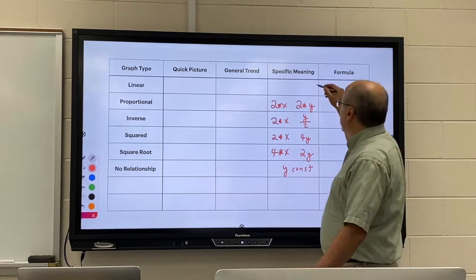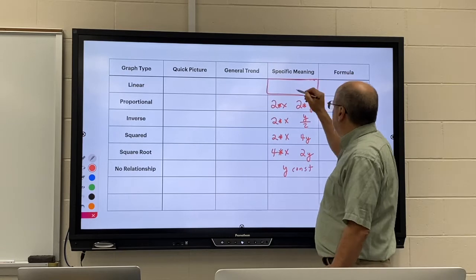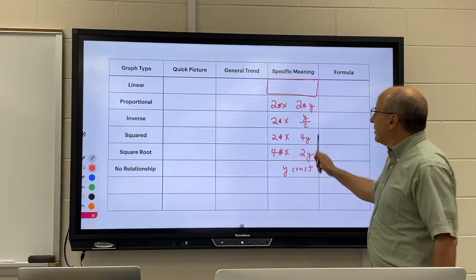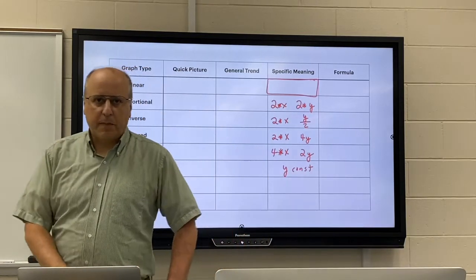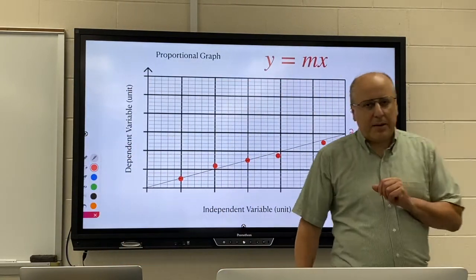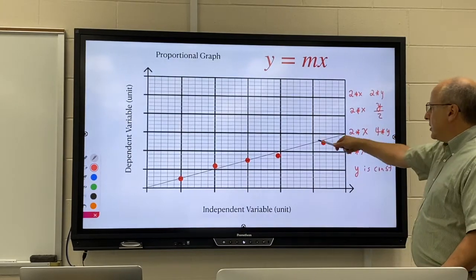A linear graph doesn't really have a nice handy dandy thing like this because of the fact that it does not go through the origin. So let me explain what I meant by that two times stuff.